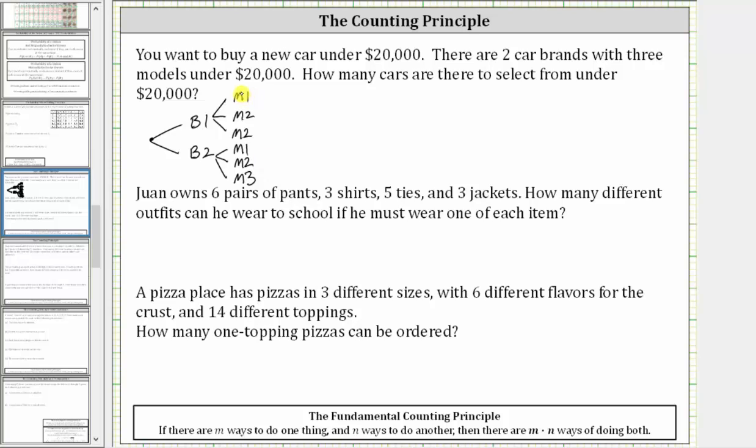And now we can see there's a total of one, two, three, four, five, six cars to select from under $20,000. So the answer is six cars.